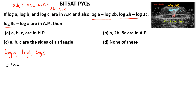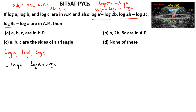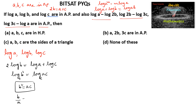So 2 times log B is equal to log A plus log C. By using the properties — log A power M is equal to M times log A, and log A plus log B is equal to log AB — we can write log B squared is equal to log AC. Since the base is the same, we can conclude B squared is equal to AC, or B upon A is equal to C upon B.